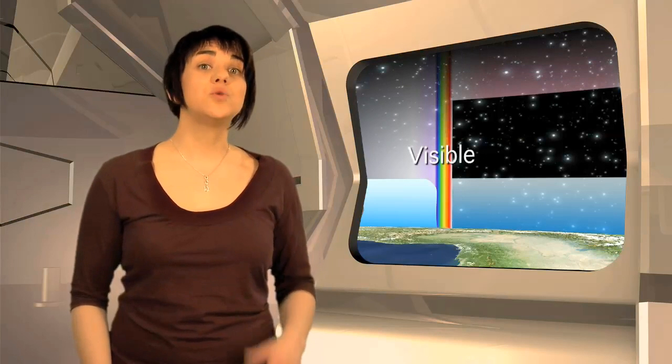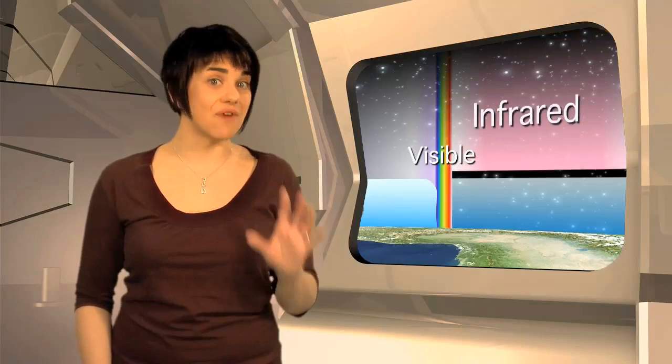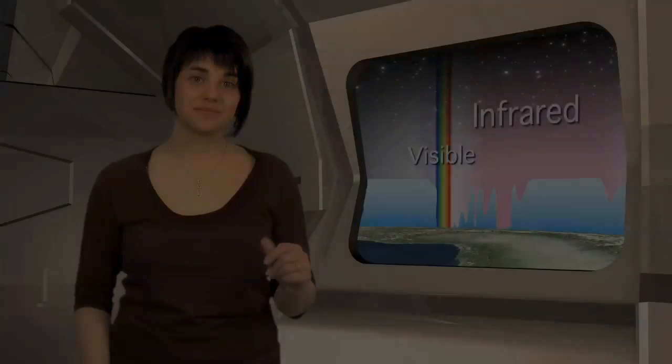If we go beyond the red part of the visible spectrum, we enter the realm of the infrared. Often infrared is described as heat that is radiated from an object, but what is important to realize is that what we would consider to be cold is also an emitter of infrared radiation.